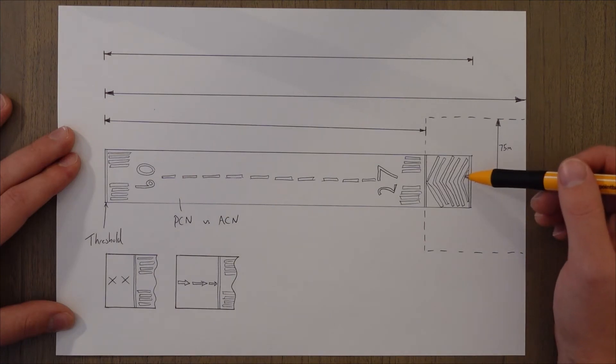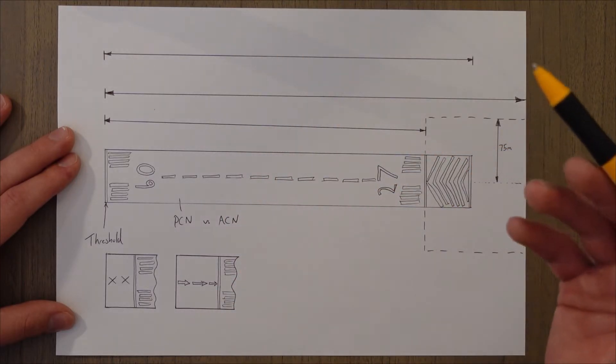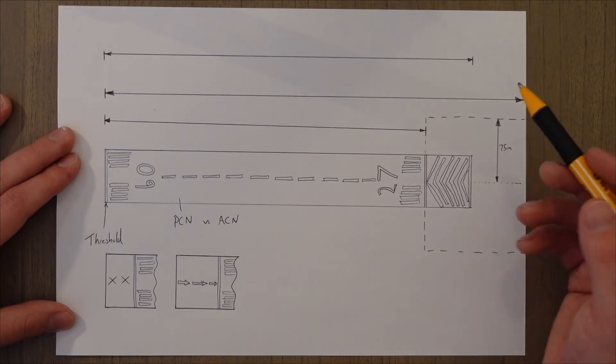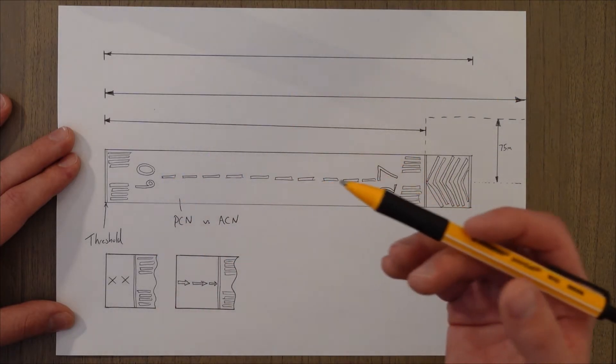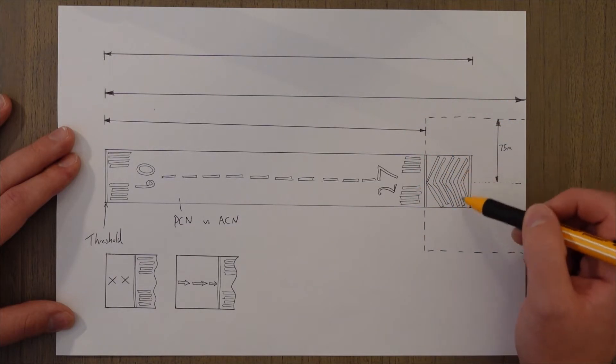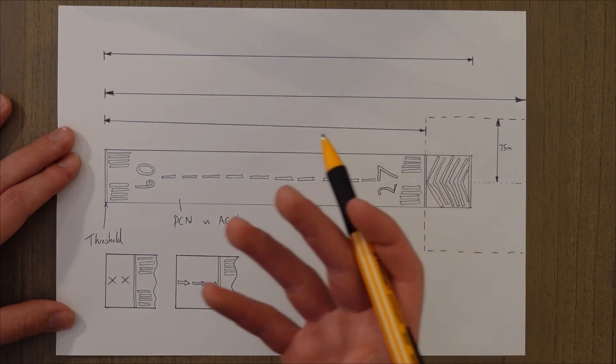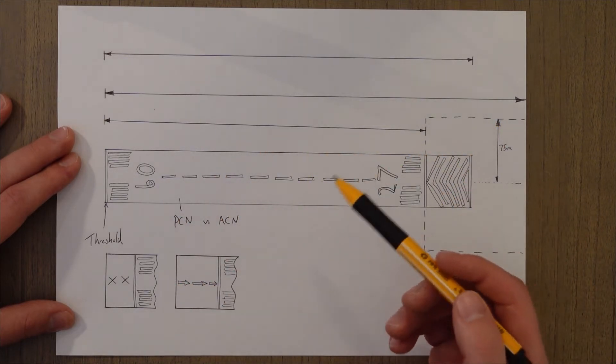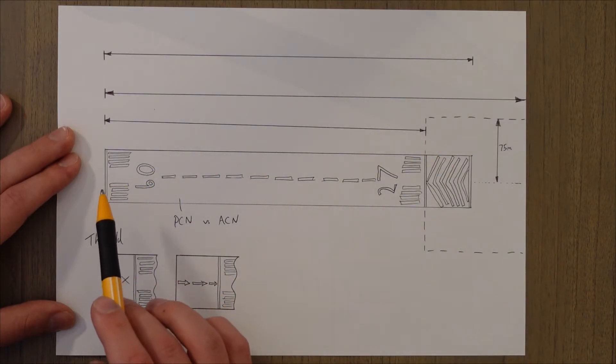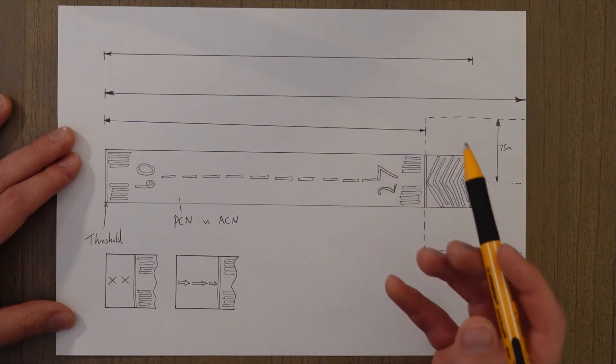A stopway is an area after the runway which is free from obstacles and at least the same width as the runway. The stopway is used for aircraft in case of a rejected high-speed takeoff, so it's not part of the runway in normal operations. This means that it doesn't need to be as strong or as well maintained as the normal runway, and it can break if needed as long as it stops the aircraft. It is normally marked by yellow chevrons, and it can be combined with a displaced threshold like this.